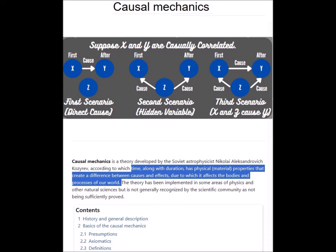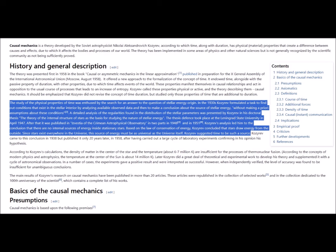Kozyrev developed the theory of causal mechanics, a theory which postulates that time, along with duration, has actual physical material properties that can create a difference between causes and effects, due to which it affects the bodies and processes of our world. It further says that the study of the physical properties of time was enthused by the search for an answer to the question of stellar energy origin.